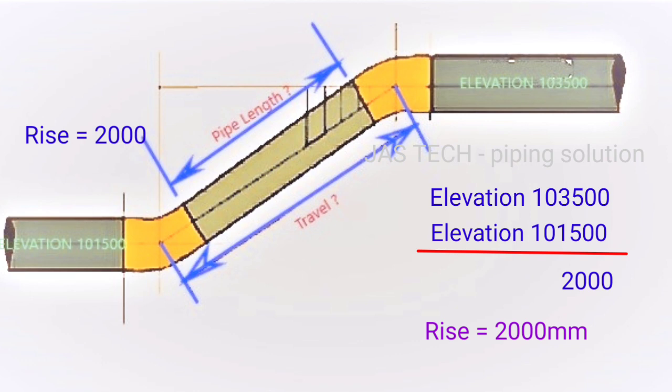Before we find out the travel distance, firstly we find out the rise distance. We have elevation measurement. From elevation measurement we find out the rise side distance.